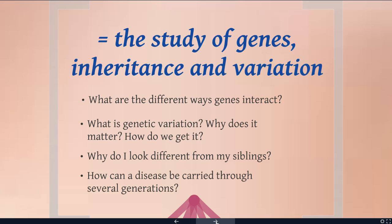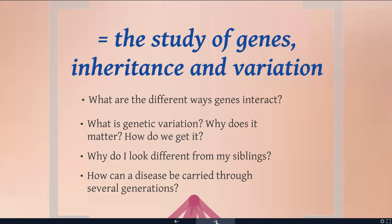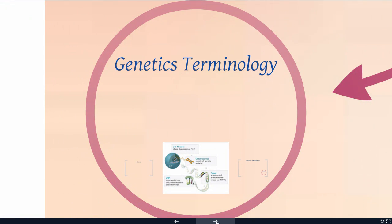A very important area of genetic research is disease — what is the genetic basis of disease, and how can diseases be carried through generations? So we're going to start off with some basic terminology. Some of these terms we have used in other lectures, but we need to get all of these words down so that we can use them for the rest of the topic.